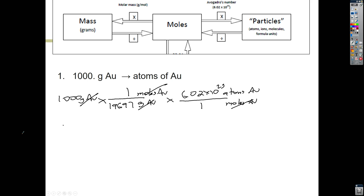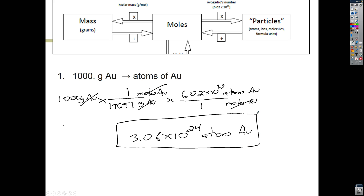Grabbing your calculator: 1000 × 1 × 6.02 × 10²³, then divide by the molar mass 196.97. Plug this in the calculator and you get 3.06 × 10²⁴ atoms of gold. So here's a great connection of how we can calculate, given the mass of an element or compound, how many atoms or molecules are in that amount of mass. Let's do another example with water.